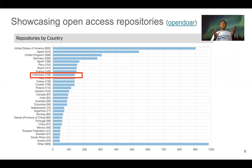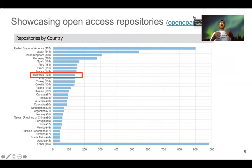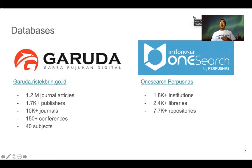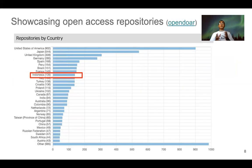This is how we showcase our open access repositories. Based on the OpenDOAR database, Indonesia has 139 open access repositories. We can compare this with the 7.7K repositories in OneSearch, meaning not all of those repositories are registered in the OpenDOAR database.